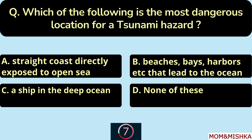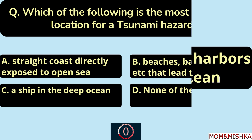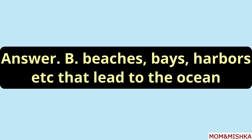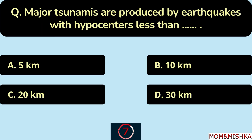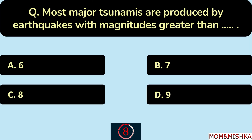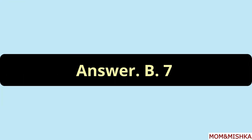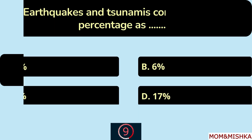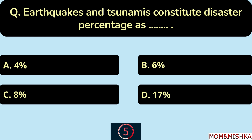The most dangerous location for a tsunami hazard is beaches, bays, harbors, etc. that lead to the ocean — option B. Major tsunamis are produced by earthquakes with hypocenters less than 30 kilometers — option D. Most major tsunamis are produced by earthquakes with magnitudes greater than 7 — option B.